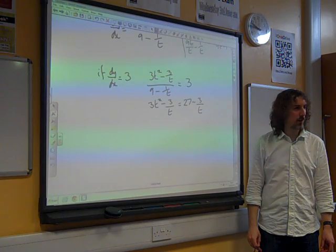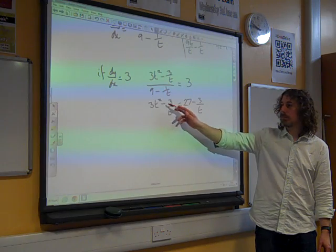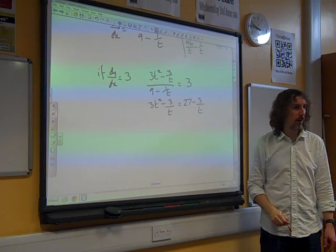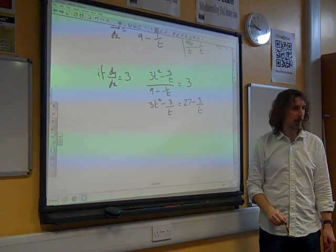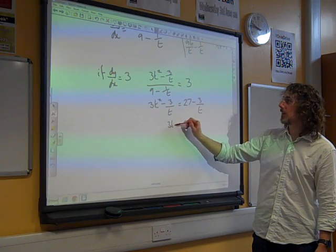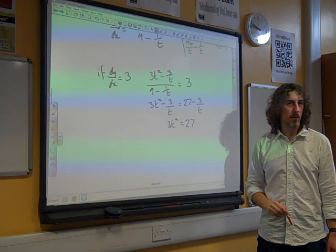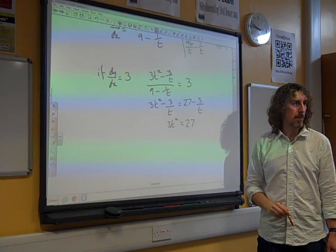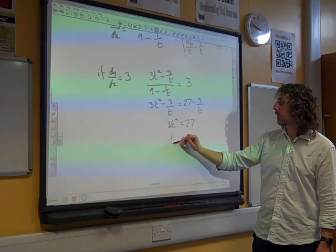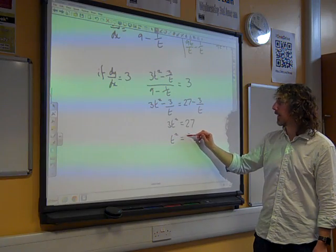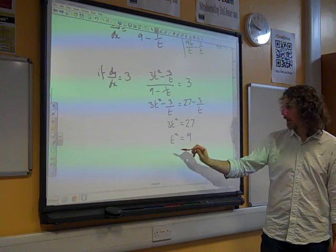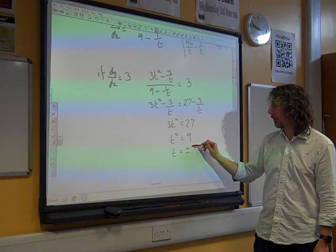But that wouldn't be the right thing to do, really. Look what we've ended up with - we've got minus 3 over t and minus 3 over t. If we add 3 over t to both sides, we get 3t squared equals 27, which gives us t squared equals 9. So t equals plus or minus 3.